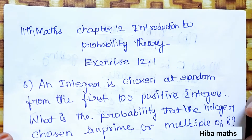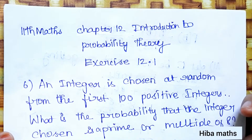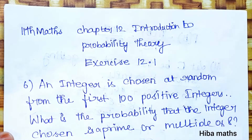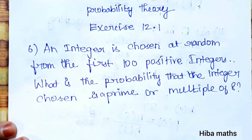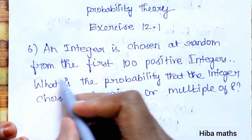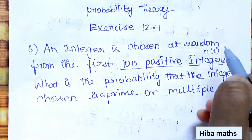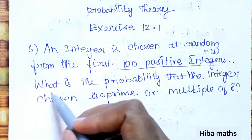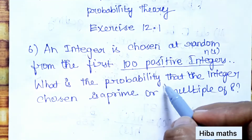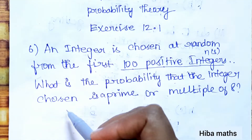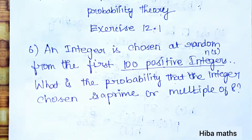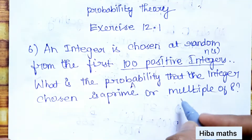Hello students, welcome to Hibamax 11 Standard, Chapter 12: Introduction to Probability Theory, Exercise 12.1, question 6. An integer is chosen at random from the first 100 positive integers. What is the probability that the integer chosen is a prime number or a multiple of 8?